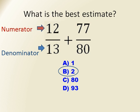So the answer to this problem is really just 2. We've got almost an entire pizza, 12 out of 13 slices, combined with almost another whole pizza, 77 out of 80 slices. The question is really asking, what's almost one plus almost one? Well, it's almost or about 2.